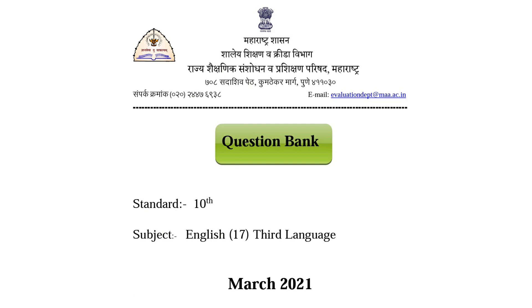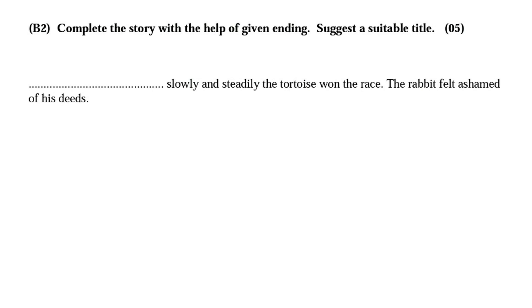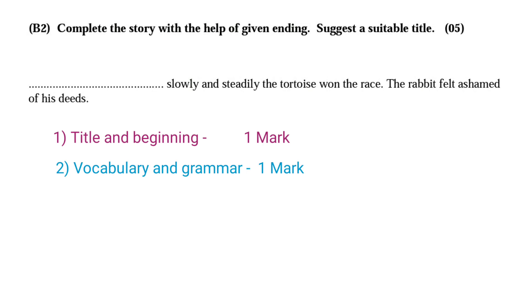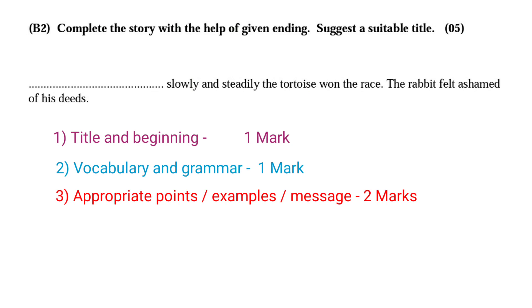The question will be like this: 'Complete the story with the help of the given ending. Suggest a suitable title.' The ending given might be: 'Slowly and steadily the tortoise won the race. The rabbit felt ashamed of his deeds.' You are expected to provide a title, a beginning, appropriate points, examples, and a message or moral.